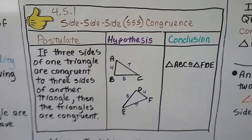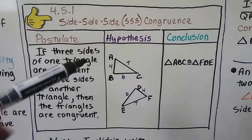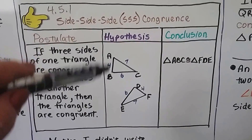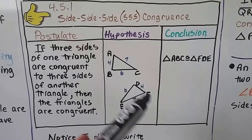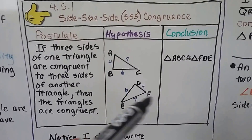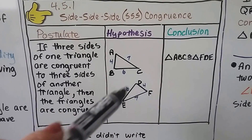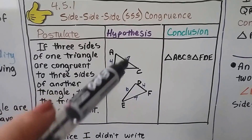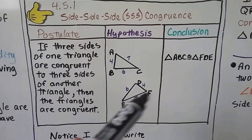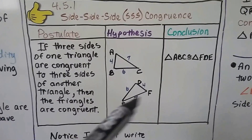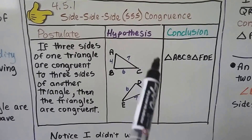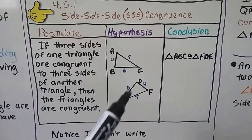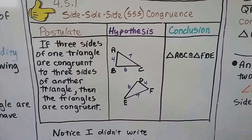then the triangles are congruent. So if you look at this, we've got AB is 4 and DH is 4, BC is 6 and DE is 6, and AC is 7 and FE is 7. Our conclusion is that triangle ABC is congruent to triangle FDE.